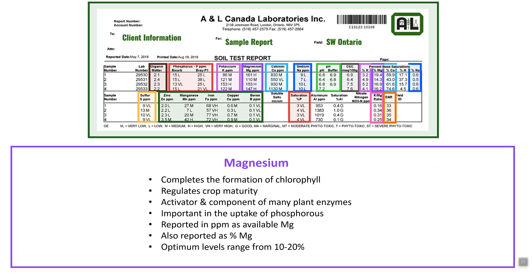Magnesium is next on our list. It completes the formation of chlorophyll, helping with photosynthesis, and regulates crop maturity. At adequate levels it acts as an activator and component of many plant enzymes. It also regulates phosphorus uptake. It is reported in PPM as available magnesium in the soil, and also as percent Mag in the percent base saturation. Optimum ranges are between 10 and 20 percent — below 10 percent you will see visual deficiencies, but above 20 percent you may also see deficiencies and typically tighter, more anaerobic soil conditions.